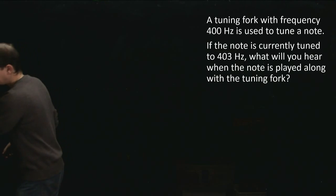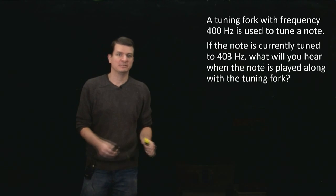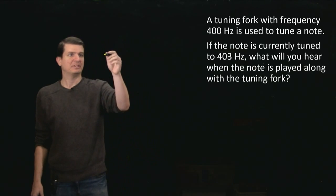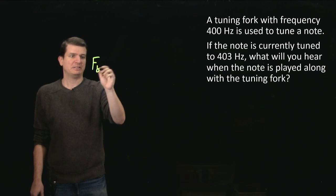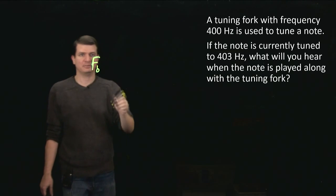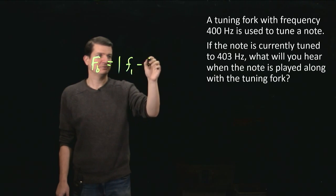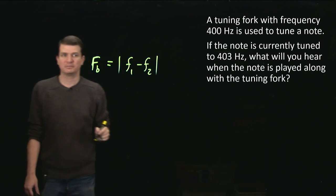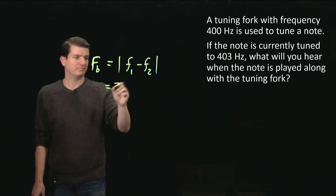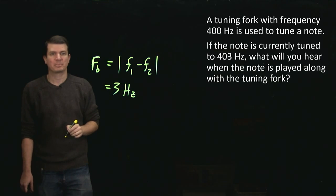And there's a nice relationship that enables you to figure out the frequency of the beat. The frequency of the beats is just the absolute value of the difference between the two frequencies that you play. So in this case, the frequency of the beat will just be 3 hertz, because that's the difference between the frequencies.